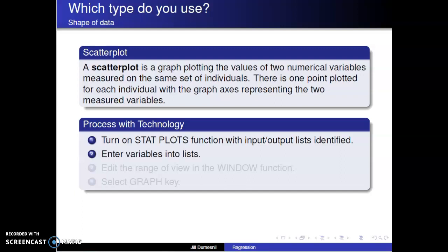We enter the variables or data into the lists. Then edit the range of view in the window function and select the graph key. The scatterplot is then displayed.